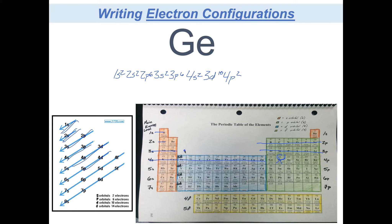This is your normal electron configuration, and it's a lot of writing that gets a little annoying. I want to point out this column right here — this family is known as the noble gases: helium, neon, argon, krypton, xenon, radon. They should already be labeled on your periodic table. These will be important as we work through the shorthand configuration. We read like a book to get to germanium, but for shorthand we're going to have to go backwards.